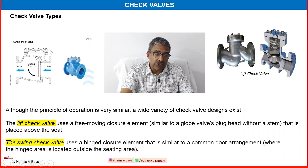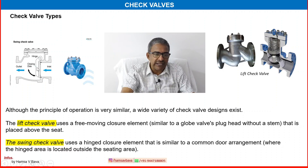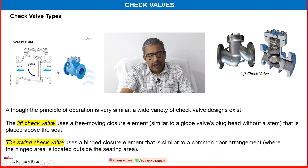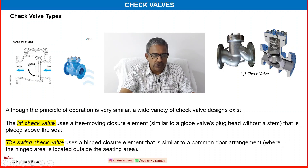Another type is the swing check valve, which is the most commonly used one. Swing check valve uses a hinged closure element similar to a common door arrangement, where the hinged area is located outside the seating area. When inlet pressure is higher on the suction side, it will open and the flow continues. This is the detailed picture of a swing check valve.